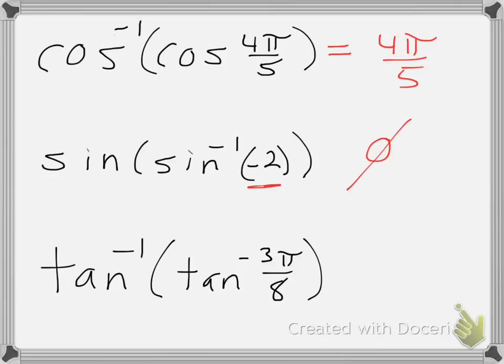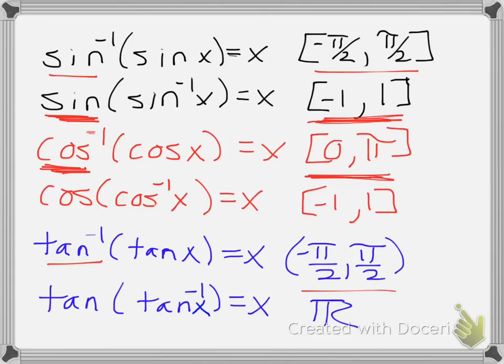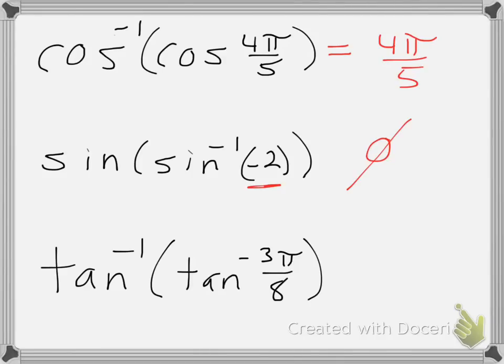Now inverse tangent of tangent of negative 3π over 8. Similarly, looking at my inverse tangent on the outside, this corresponds to negative π over 2 to π over 2. So the question is, is negative 3π over 8 within the range from negative π over 2 to π over 2?